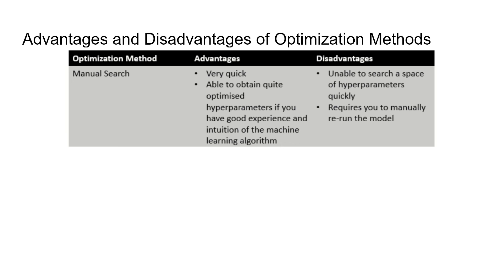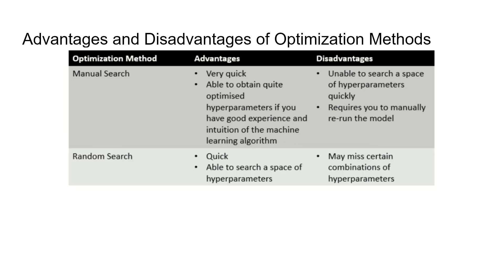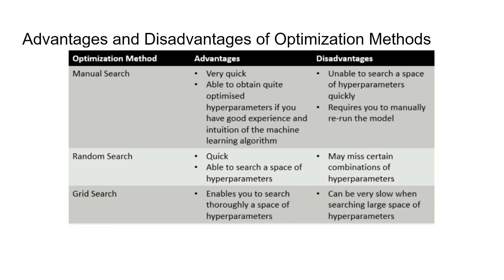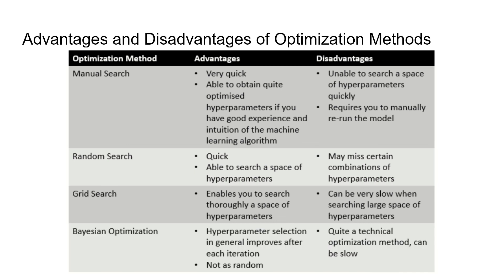For random search, it's quite quick and we're able to search a space of hyperparameters, but since it is random, we may miss certain combinations of hyperparameters. Next is grid search, which looks at every possible combination of hyperparameters. An advantage is that it enables you to search thoroughly through a space of hyperparameters, but since you are searching every possible combination, it can be very slow when searching a large space of hyperparameters.